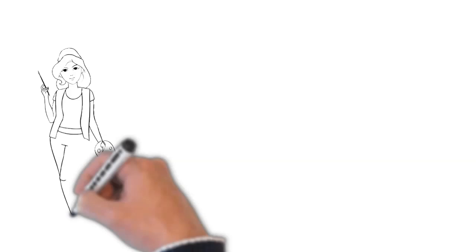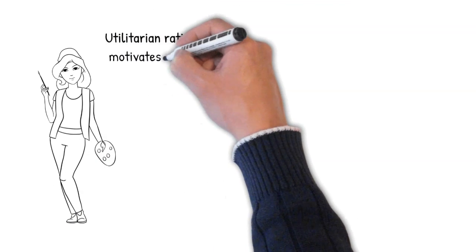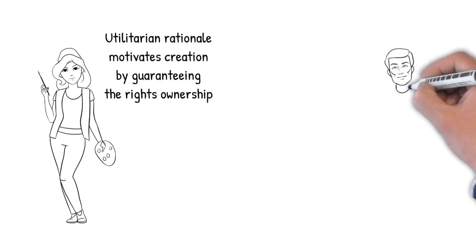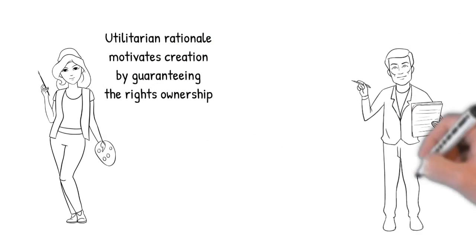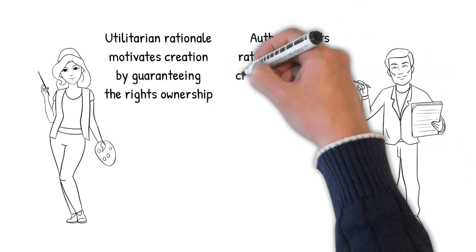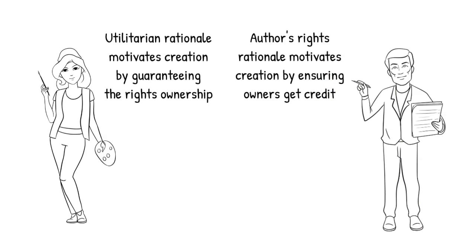There are two legal rationales underpinning copyright law. One is to motivate people to create new works by guaranteeing their ownership of their rights to it — this is called the utilitarian approach. Another is to legally acknowledge the connection between creators and their works. This author's rights legal rationale is concerned with ensuring creators receive attribution and preserve the integrity of their works.